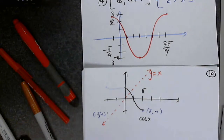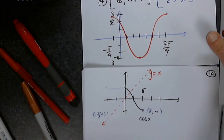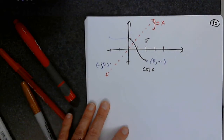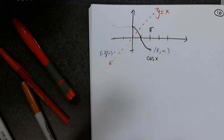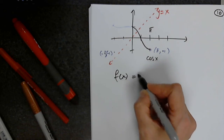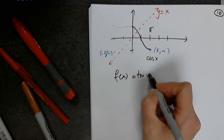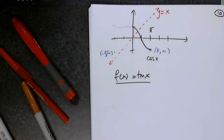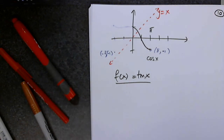Let's look at the last one — tangent. F of x equals tangent x. Unfortunately, we're out of time. It's 6:45.